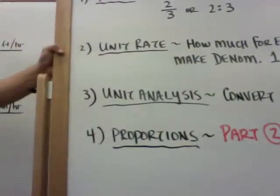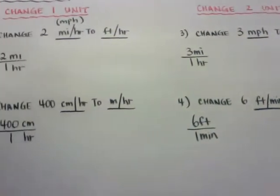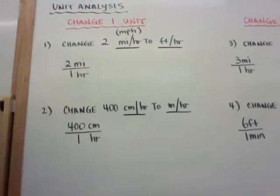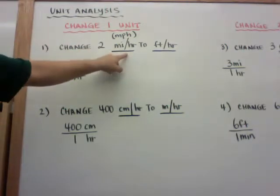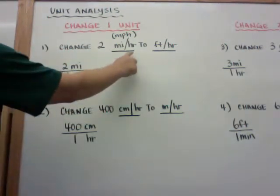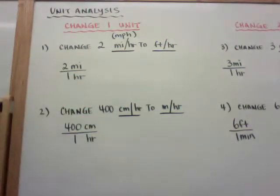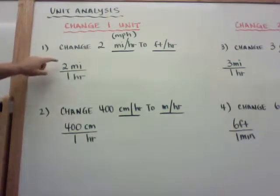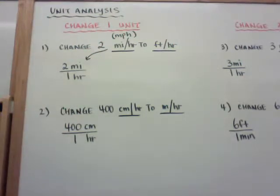The next ones are going to be unit analysis. I'm going to do a couple easy ones here and some harder ones. So the first one is changing one unit. What it will say is: change 2 miles per hour to feet per hour. You can see the hour stays the same, so all you're changing is miles to feet. You want to put 2 miles over 1 hour. Use fractions with straight lines — don't slash them.